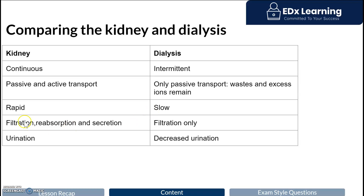The kidneys, especially in the proximal convoluted tubule, undergo reabsorption; in the distal convoluted tubule, they undergo secretion. Dialysis, by contrast, only undergoes filtration. With the kidneys you do produce urine, whereas on dialysis you don't — we call that oliguria. If someone produces no urine at all, it marks very severe end-stage renal failure, and we call that anuria.